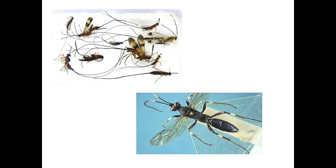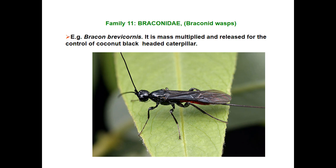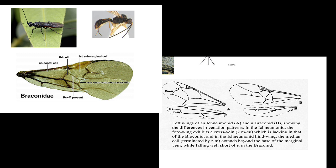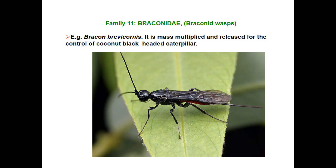Next is Braconidae wasp. It is a small, stout-bodied insect having one recurrent vein (median-cubital vein), compared to two in Ichneumonidae. They are gregarious parasites — meaning they attack in groups, unlike solitary parasites which attack alone. In many species there is a chance of polyembryony — a single zygote having multiple embryos. Best example is Bracon brevicornis, which is a larval parasitoid.